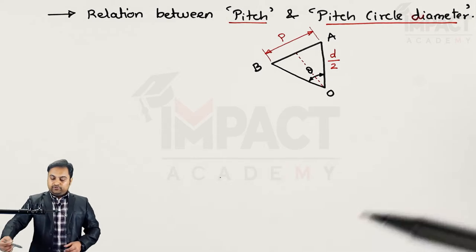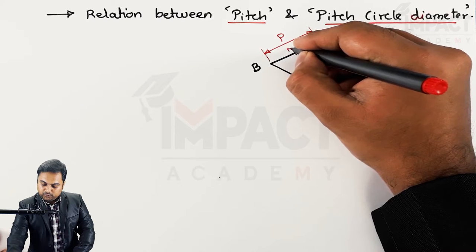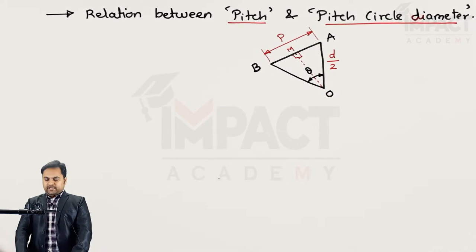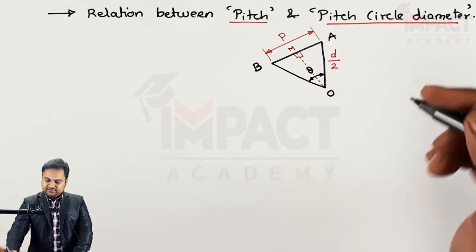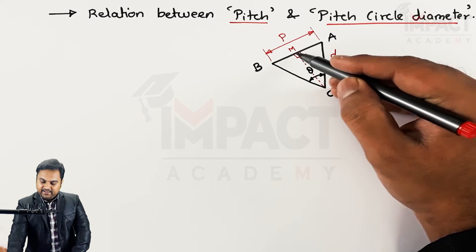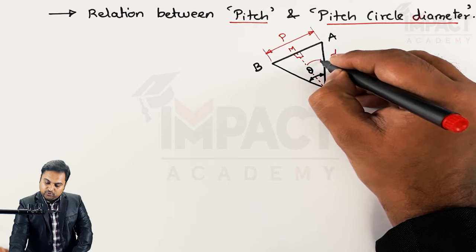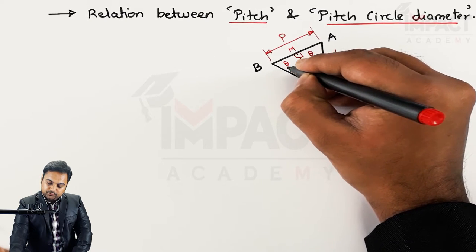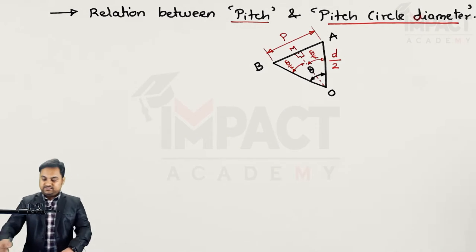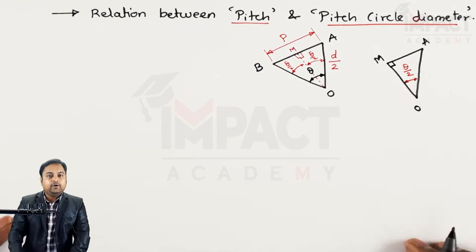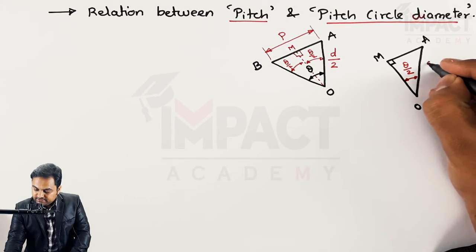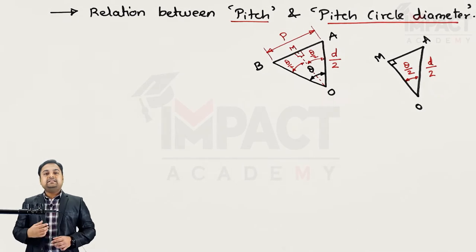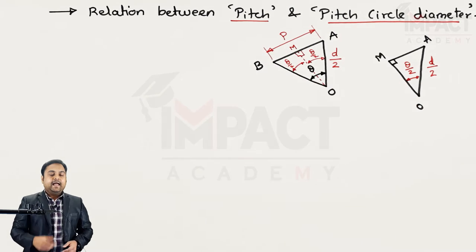A perpendicular OM is drawn from O to line AB. To find the pitch, the triangle is divided into two parts. Considering triangle AMO, the angle AOM is exactly half of theta, that is theta/2, and the remaining angle is also theta/2. The distance AO is the radius of the pitch circle, equal to D/2. Once we find AM, we multiply by 2 to get AB, which is the pitch.